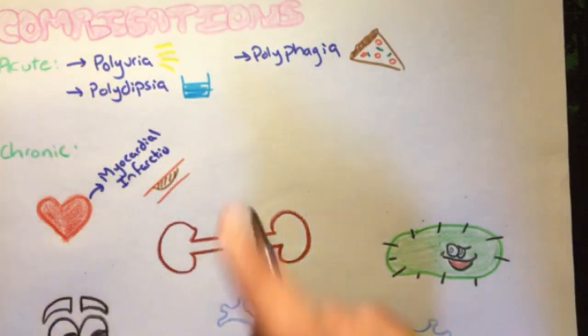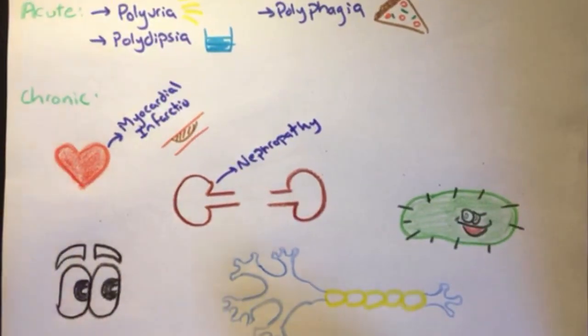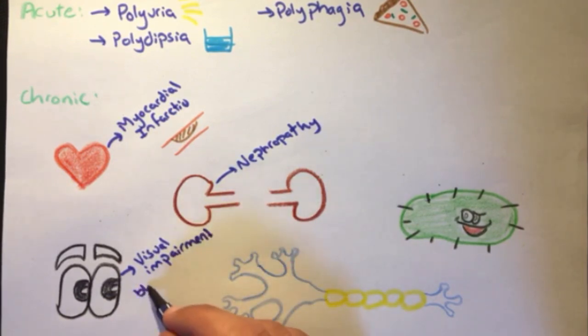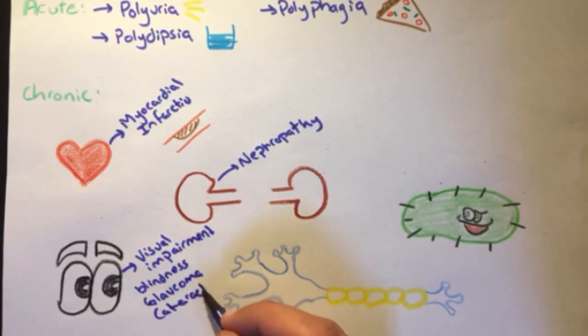Second of all, on the kidneys, it can cause nephropathy, which is a renal disease requiring regular dialysis. On the eyes, it can cause visual impairment and sometimes total blindness, in addition to glaucoma and cataract formation due to the sorbitol and fructose.